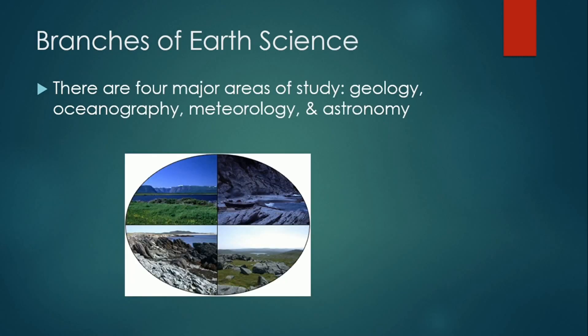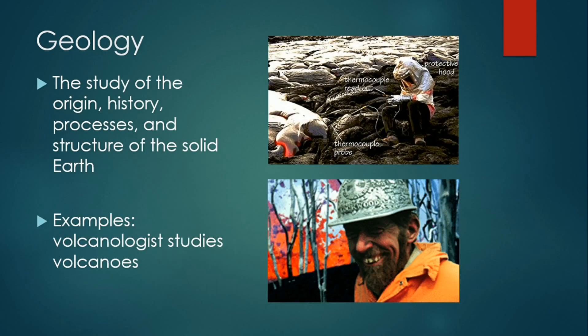What are the branches of earth science? There are four major areas of study: geology, oceanography, meteorology, and astronomy.